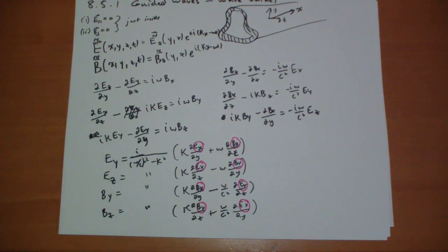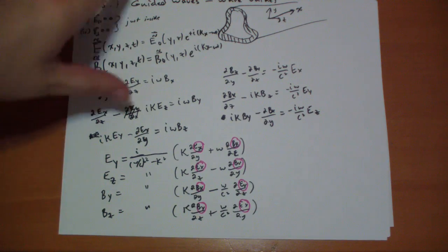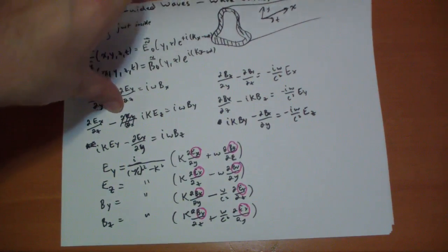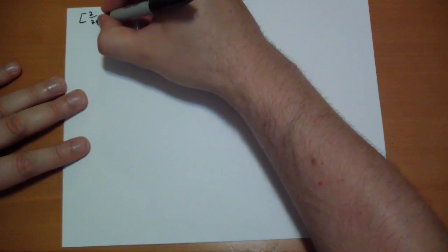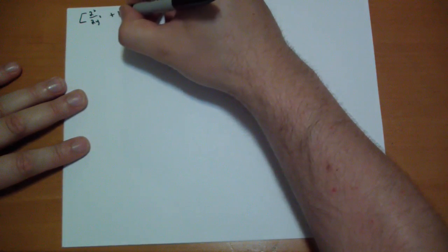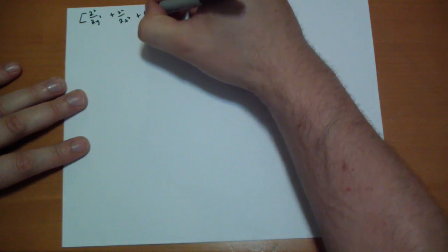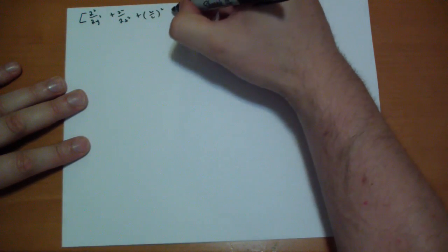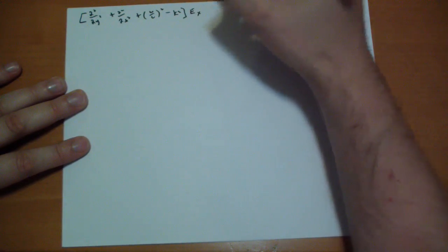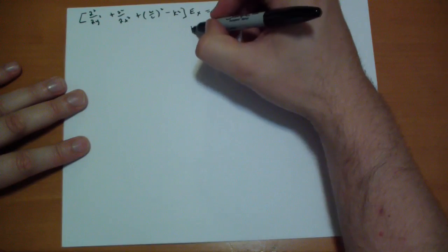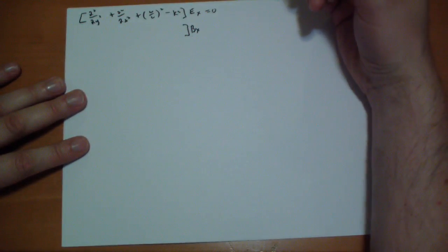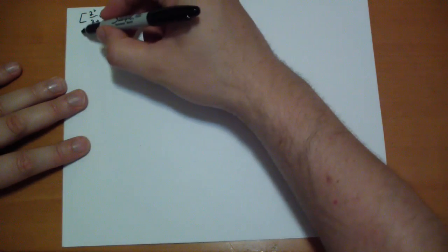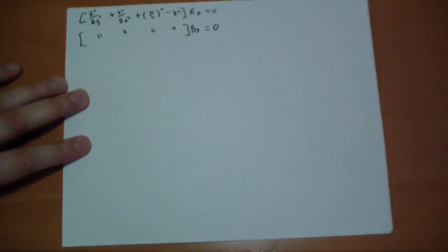When we plug this into Maxwell's equations, we get these uncoupled equations. The operator (d²/dY² + d²/dZ² + omega/c² − kappa²) applied to E_X must equal zero. And the same thing for B_X — everything has to equal zero.